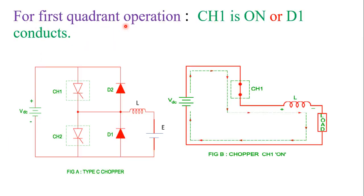For first quadrant operation, CH1 is turned on or diode D1 conducts. When chopper CH1 is turned on, the current path is: VDC, CH1, inductor charging with polarity positive and negative, load, and back to VDC. The current is positive in this case and the voltage is also positive, so the device works in the first quadrant.